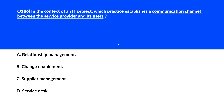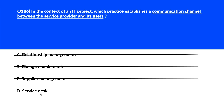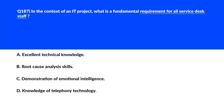Now we need to choose a practice which stabilizes the communication channel between the service provider and its users. Option A says relationship management — focuses on maintaining good relationships with stakeholders, this is out. Option B says change enablement — about managing changes in the project, incorrect. Option C says supplier management — deals with managing relationships with suppliers and vendors, not with users, wrong. Option D says service desk. Service desk acts as the primary point of contact between the service provider and its users, facilitating communication and support. Option D is the right choice.